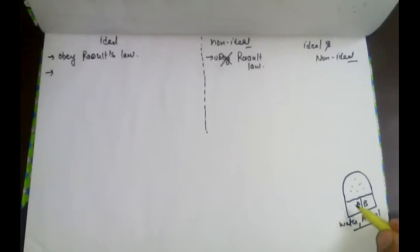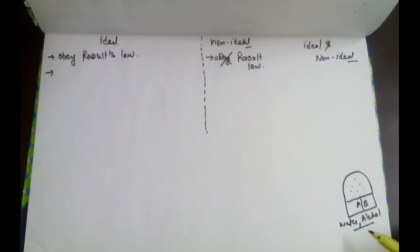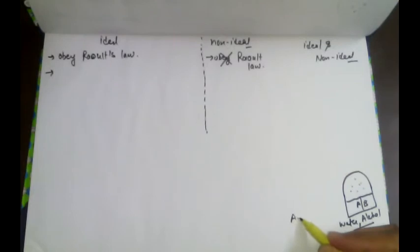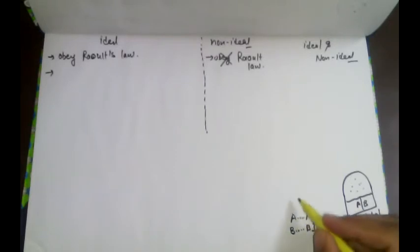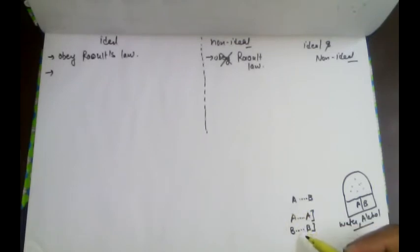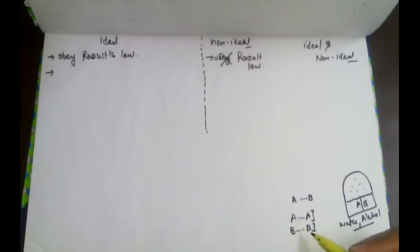In order for a solution to behave ideally, the solute and solvent must be of the same nature. If A and B are two volatile components of a solution, then there should be no change in the magnitude of forces when they are mixed. The A-B interaction must be the same as the A-A and B-B interactions. This is the second characteristic: if a solution has these properties, it will act as an ideal solution.